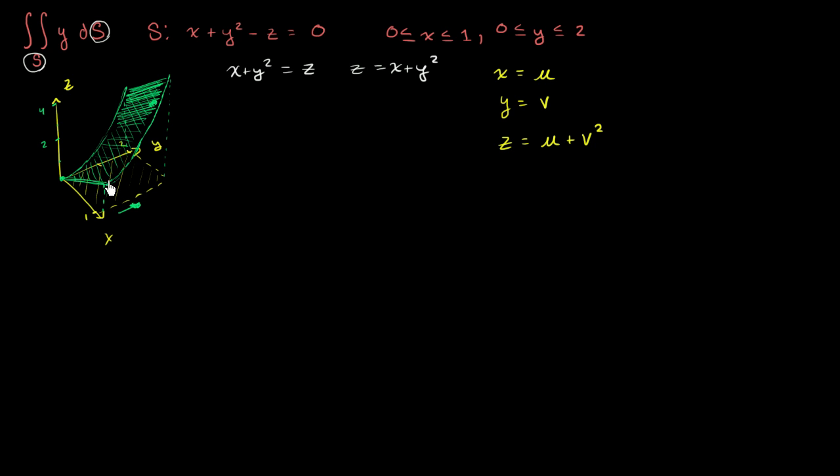So our surface, written as a vector position function, we can write it as r, which is going to be a function of u and v. It's going to equal ui plus vj plus (u plus v squared)k.